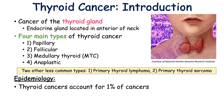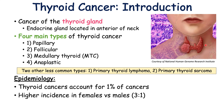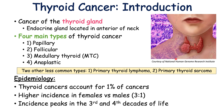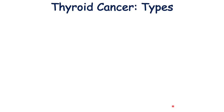Thyroid cancers account for approximately 1% of all cancers, and there is a higher incidence in females versus males. Females outnumber males 3 to 1 with thyroid cancer. Certain types of thyroid cancer have different ages of onset, but on average, the incidence of thyroid cancer peaks in the third and fourth decades of life.